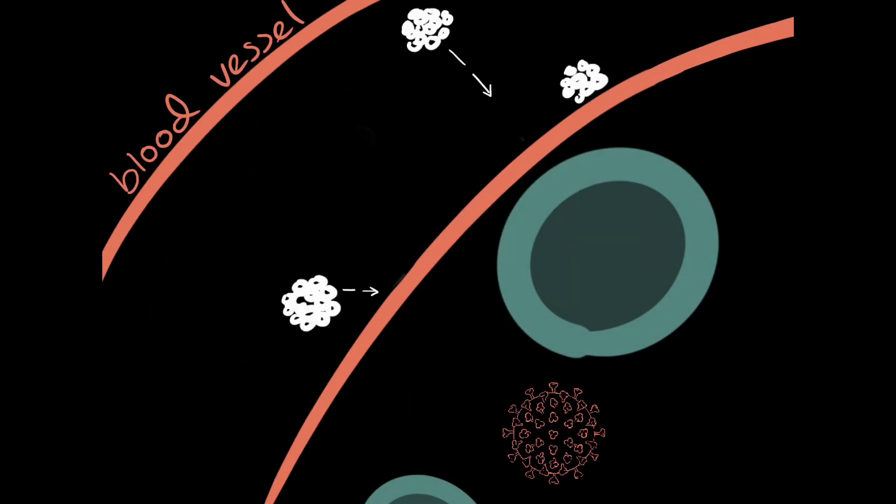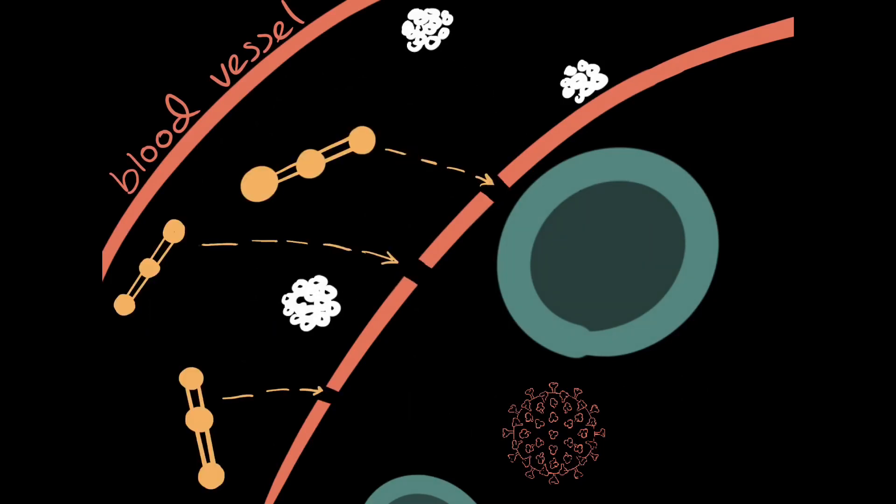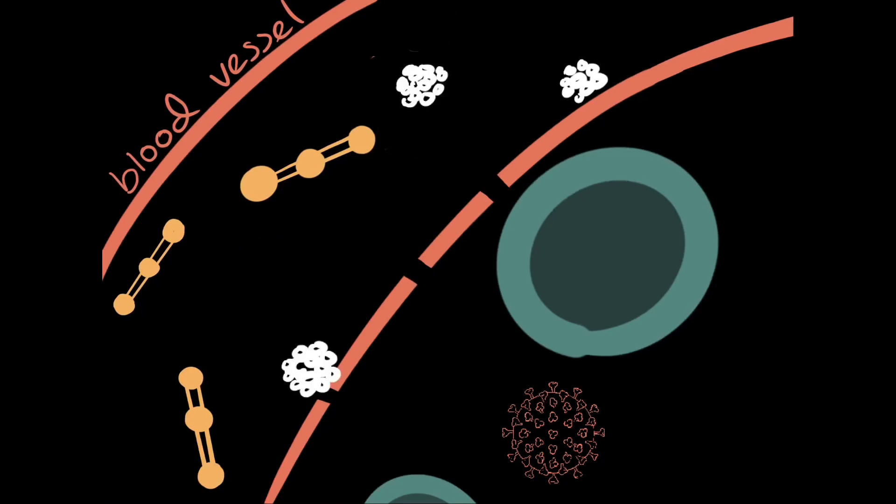Immune cells can't push through blood vessels on their own, but fibrin can create little gaps in the blood vessel walls, allowing immune cells to push through and defeat the virus.